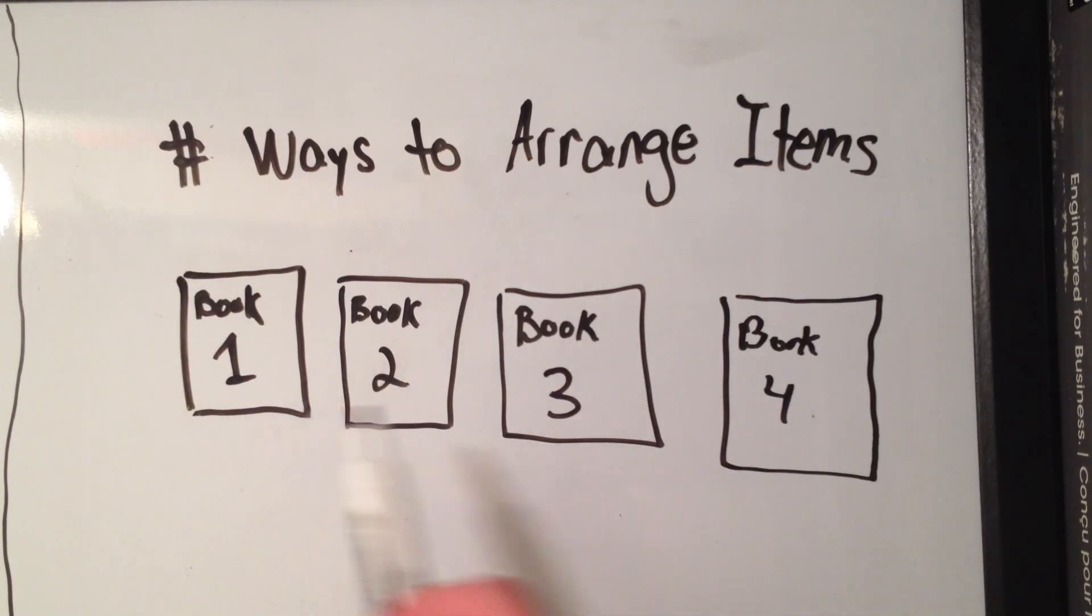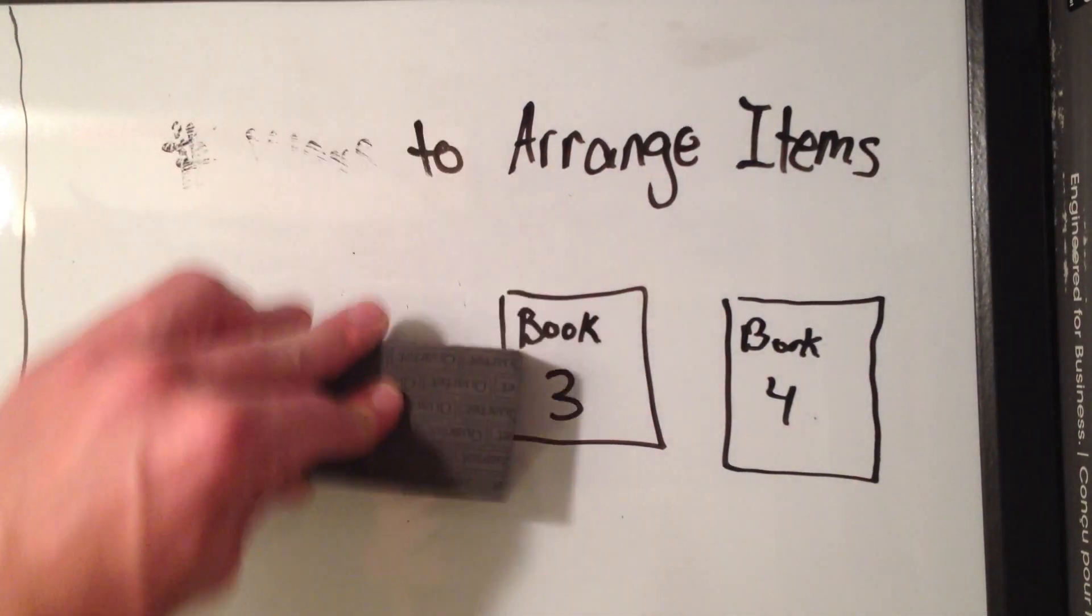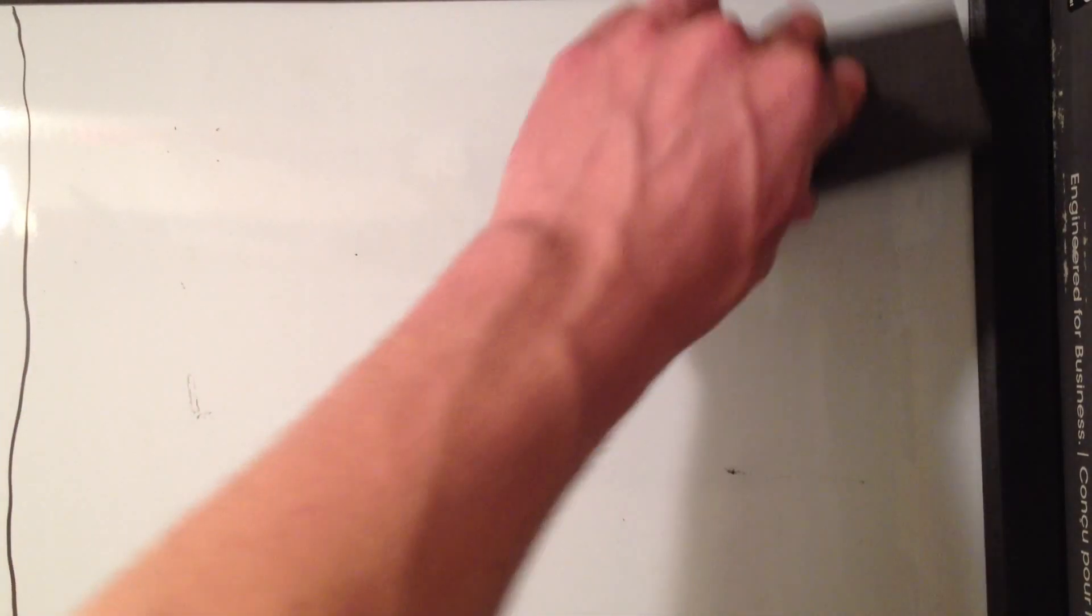So maybe this is the order: one, two, three, four, but it could also be four, three, two, one. So let's think about this in a more mathematical sense.